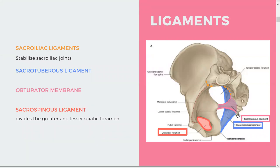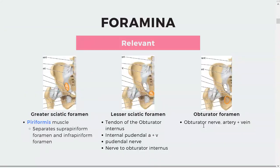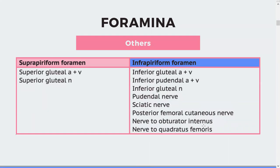Those ligaments create foramina. The very important ones are the greater sciatic foramen, lesser sciatic foramen, and obturator foramen. Here are some of the structures that go through them — I would highly recommend learning those. They are a little bit less relevant but still very important.